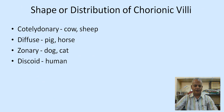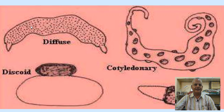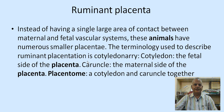Based on the shape or distribution of the chorionic villi, placenta has been classified as cotyledonary in cattle and sheep, diffuse in pigs and horses, zonary in dog and cat, and discoid in human beings. The diffuse placenta has chorionic villi distributed throughout the uterine horn. The cotyledonary type has special zones of attachment called cotyledons. The discoid type is seen in humans and the zonary type in carnivores.